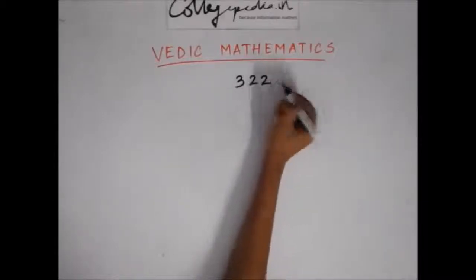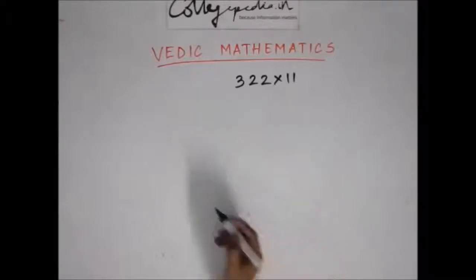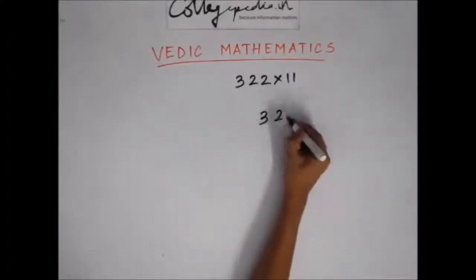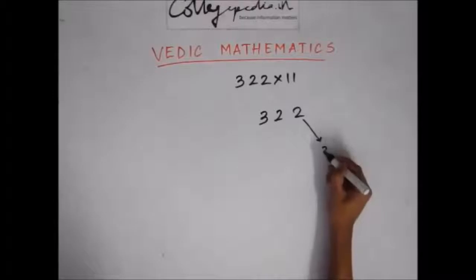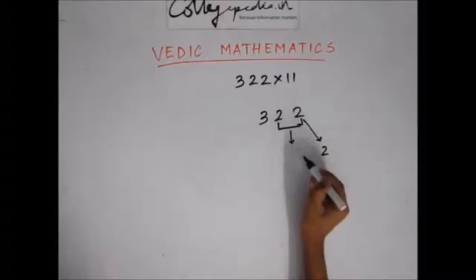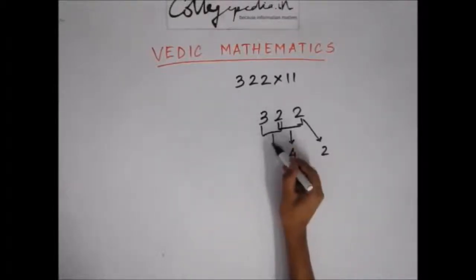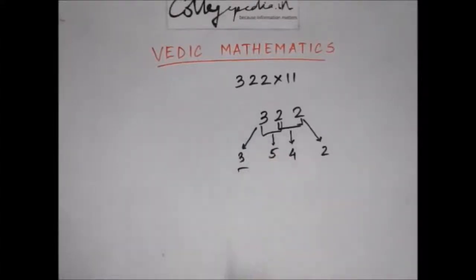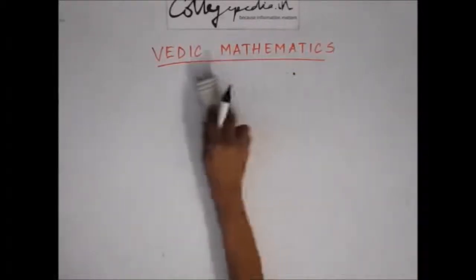Let's take another example: 322 multiplied by 11. Between the original digits, put the sum of digits taken two at a time. The last digit remains as is. I take the sum of these two digits: 2+2=4. Then 2+3=5. The first digit remains as 3. So my answer is 3542.